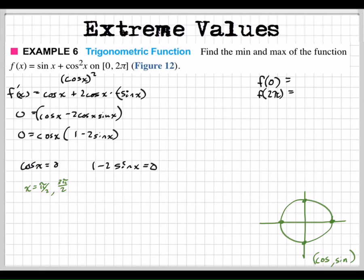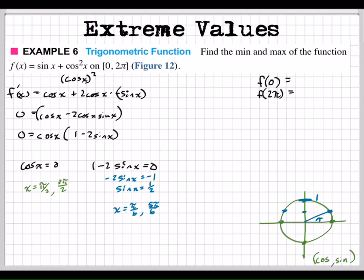For 1 minus 2 sine x equals 0, we subtract 1 from both sides to get negative 1, then divide both sides by negative 2. So sine x equals 1/2. Where on the unit circle is y equal to 1/2? Pi over 6 is one answer, so x equals π/6. And the other value is 5π/6.